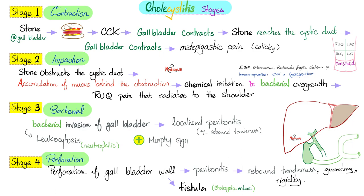Pathogenesis of cholecystitis: cholecystitis happens when the stone gets impacted in the cystic duct because the gallbladder will not be able to drain. This happens in many steps — first, contraction, thanks to CCK especially after a fatty meal. Then impaction. Then bacteria comes, because every time there is stagnation, it invites bacteria.